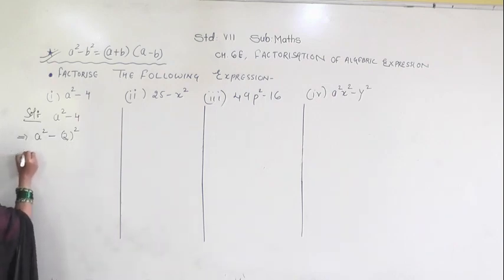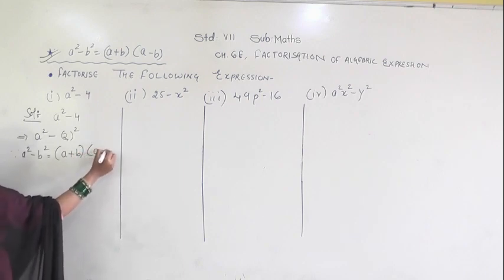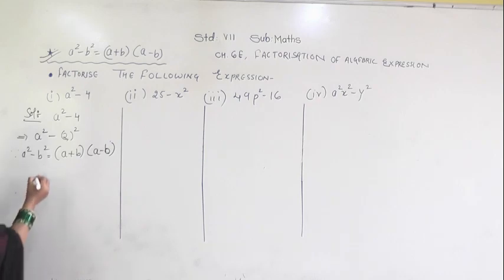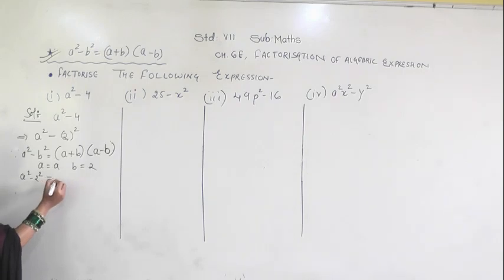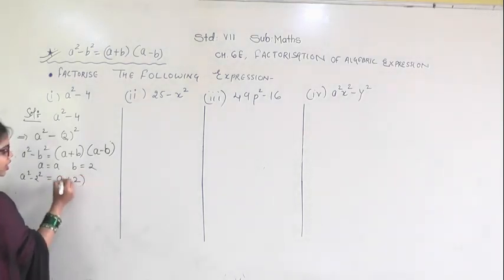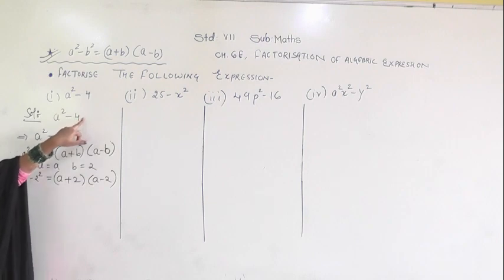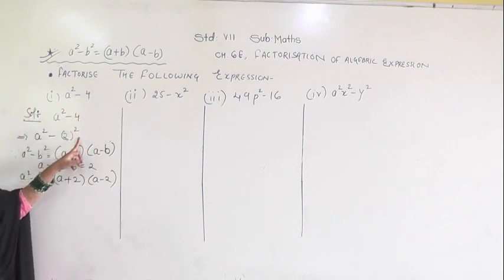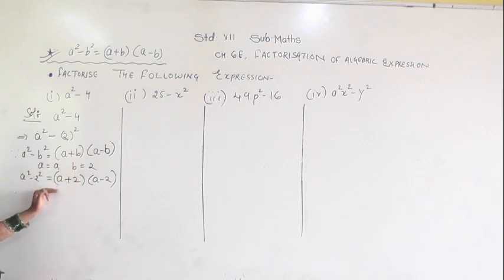The formula is a squared minus b squared equals (a plus b)(a minus b). Here a equals a and b equals 2. So a squared minus 2 squared equals (a plus 2)(a minus 2). First convert a squared minus 4 into a squared minus 2 squared, then substitute the values of a and b. The answer is (a plus 2)(a minus 2).